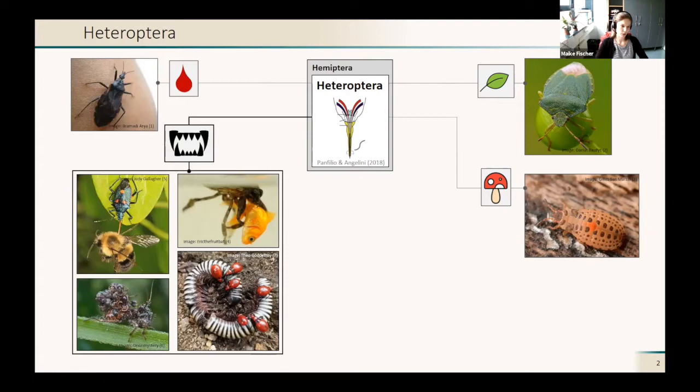These predatory heteropterans, which you can see here in this picture, they feed on other insects or even small vertebrates like this fish here.